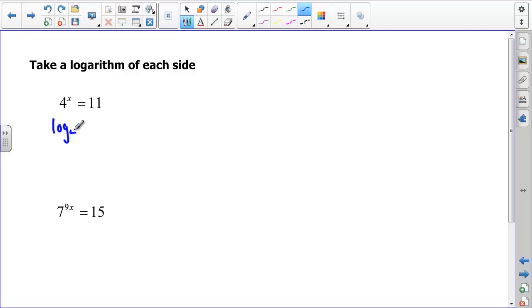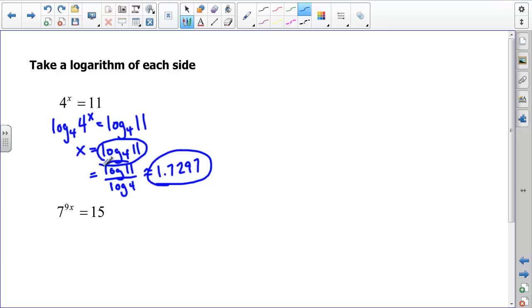What I'd love to do is be able to take the log base 4 of 4 to the x and the log base 4 of 11. Why would I like to do that? Because the log base 4 of 4 to the x is just x, and that gives me an answer of log base 4 of 11. Now, if I don't have an Inspire, I can't do this, and so I would have to use the change of base property and say log of 11 over log of 4. But if I do have an Inspire, I could just do log base 4 of 11. Either way, I get an exact value and an approximate value of 1.7297.